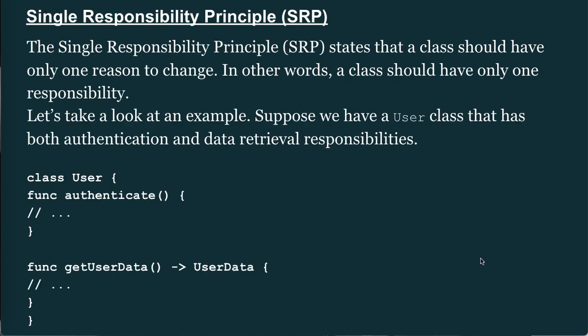Moving on to the Single Responsibility Principle (SRP). SRP states that a class should have only one reason to change — in other words, a class should have only one responsibility. For example, suppose we have a User class that has both authentication and data retrieval responsibilities: class User { func authenticate() ... func getUserData() -> UserData }.